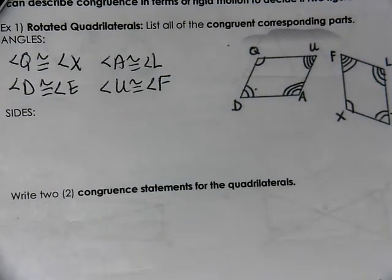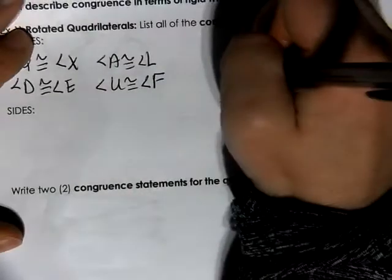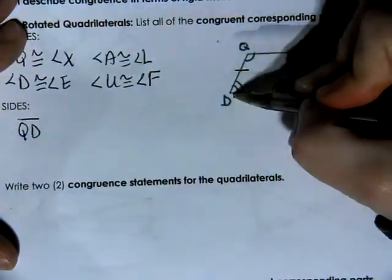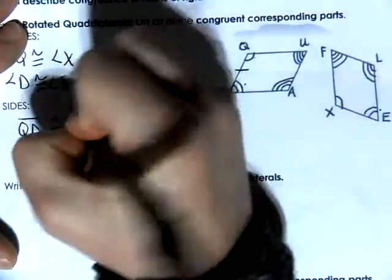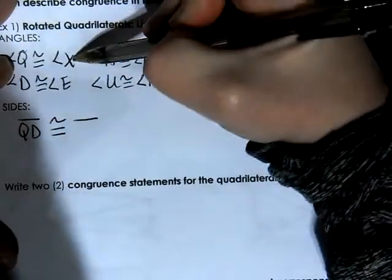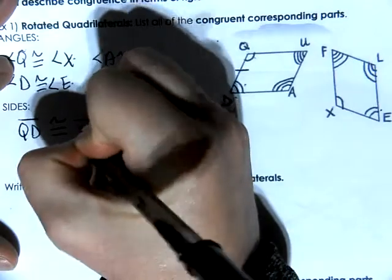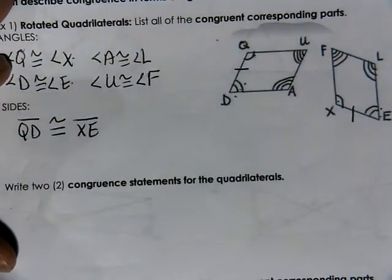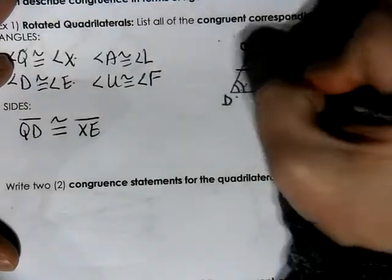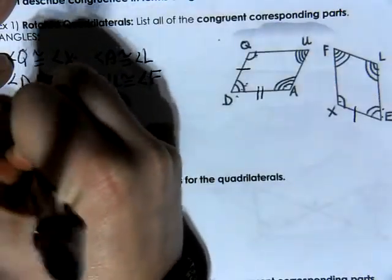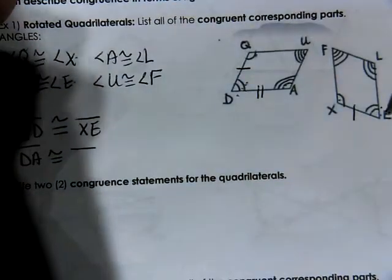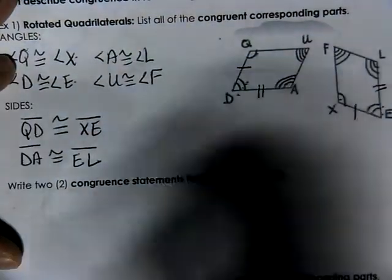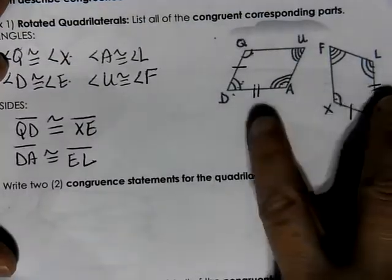The sides — that's where it gets a little tricky. Looking from Q to D: segment QD has one and two arc marks and is congruent to segment XE, since Q matches with X and D matches with E. We go from 1 to 2 tick marks on both sides. Next, going from 2 to 3, that is D to A: segment DA is congruent to segment EL, since D matches with E and A matches with L. I'll mark those with two tick marks.